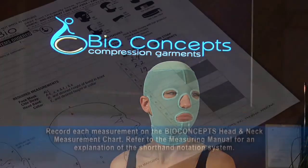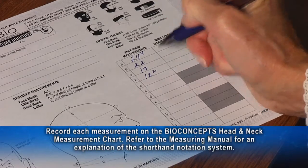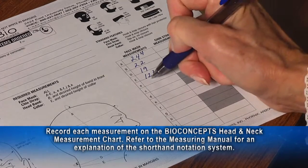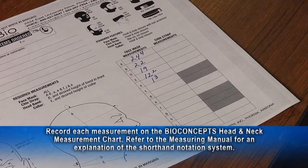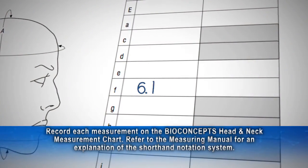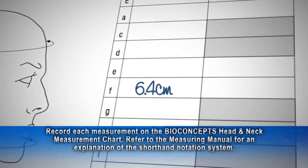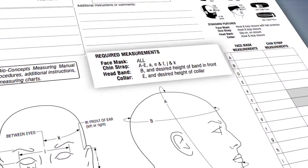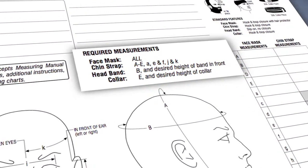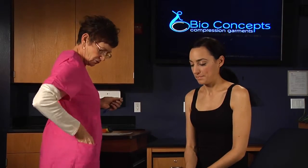Using the full face mask as an example, record each measurement on the Bio Concepts head and neck measurement chart. Refer to the measuring manual for an explanation of the shorthand notation system. Measurements recorded in inches or centimeters are welcome — simply record in decimal notation, for example, six point four centimeters. It is critical to look up the required measurements before you start measuring.